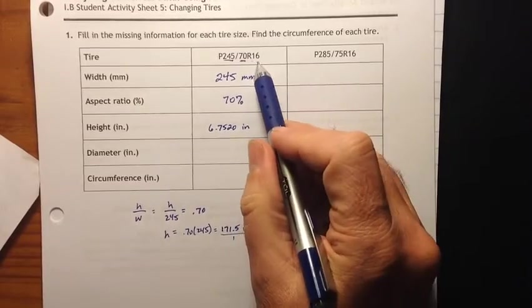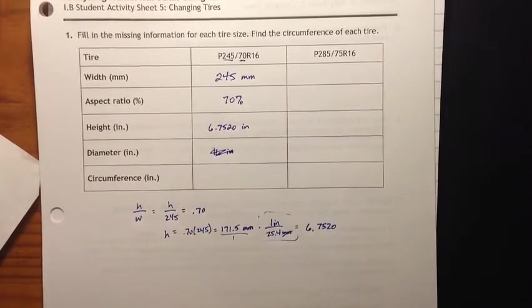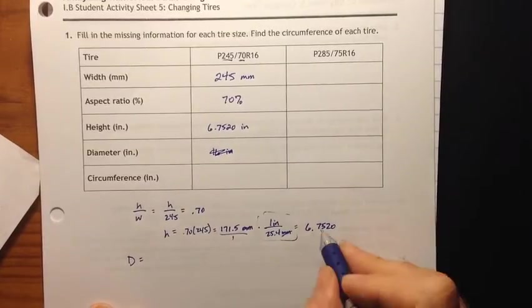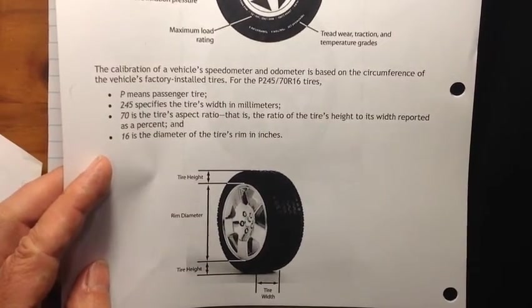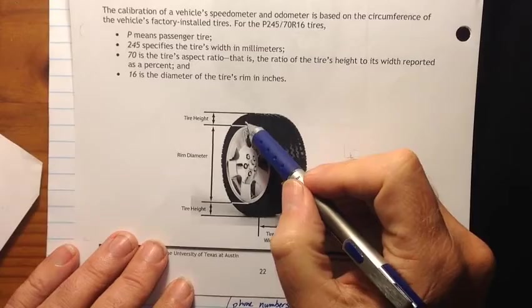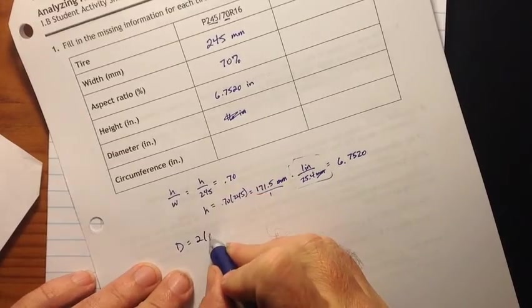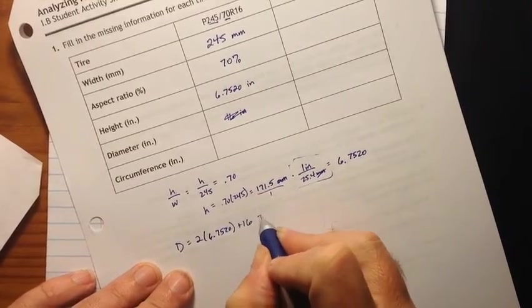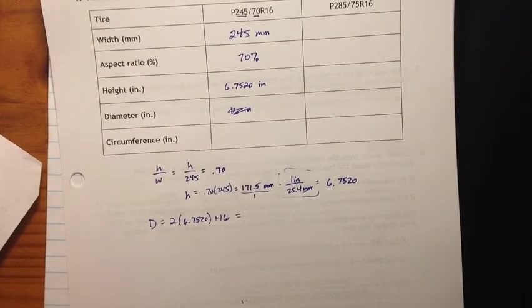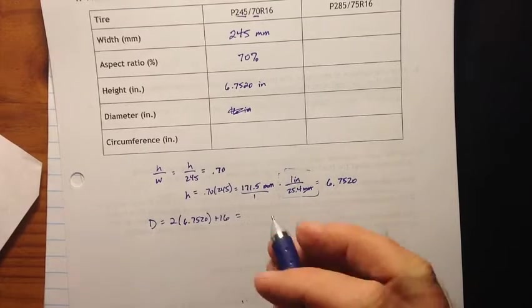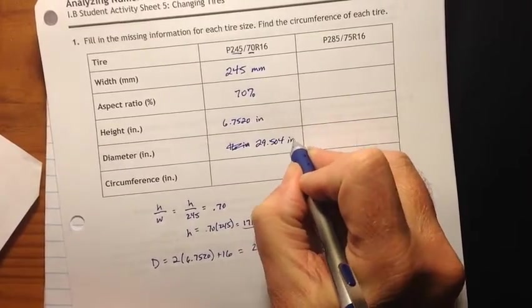All right. The diameter, we know, is 16 inches. Diameter of the rim. Actually, excuse me, they're asking for the diameter of the tire. Diameter of the tire. So the diameter of the tire is going to be, if we look at this, it's the height times 2, the height here, the height here, plus the rim diameter. So 2 times 6.7520 plus 16. 2 times 6.752 plus 16. And that gives me 29.504 inches. 29.504 inches is the diameter.